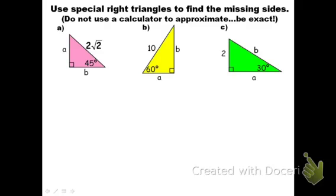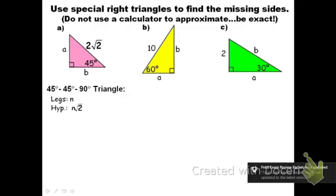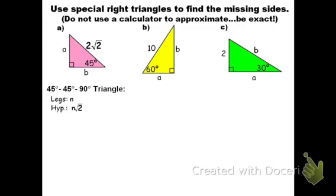I'll list out that it's a 45-45-90 triangle, meaning legs are both n and hypotenuse is n root 2. They told me the hypotenuse is 2 root 2. So I write that next to where it says hypotenuse. If n root 2 equals 2 root 2, I divide by root 2 on both sides — the root 2's cancel, so n equals 2. Checking: plugging 2 in gives 2 root 2 for the hypotenuse, which matches.